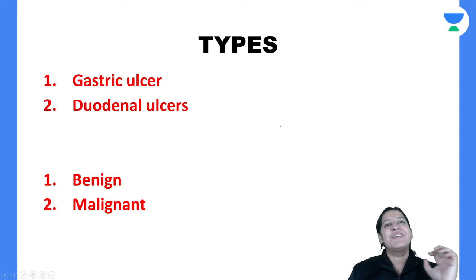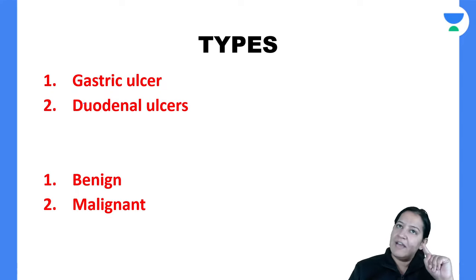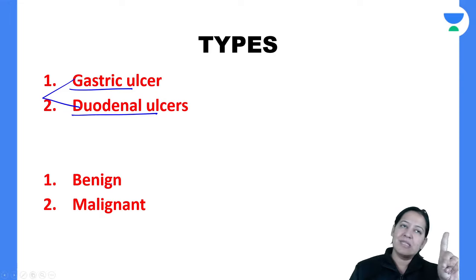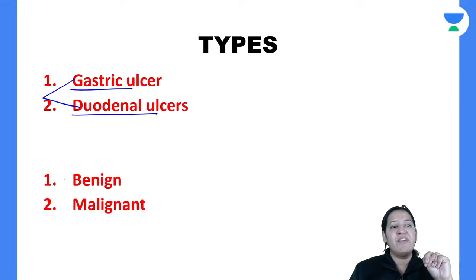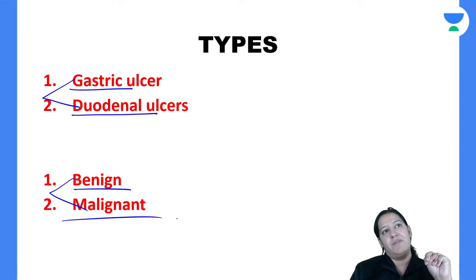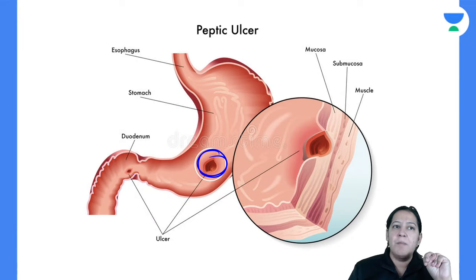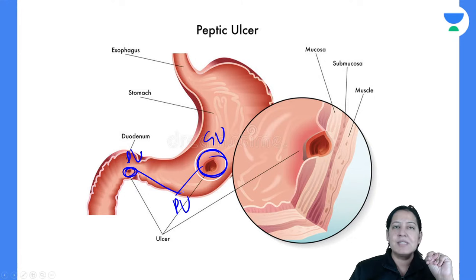Coming on the types of peptic ulcer. There are two basic types: gastric ulcer, which is present in the stomach, and duodenal ulcer, which is present in the duodenum. Another classification is benign and malignant. You can see one ulcer present in the stomach and one in the duodenum — gastric ulcer and duodenal ulcer together known as peptic ulcer.